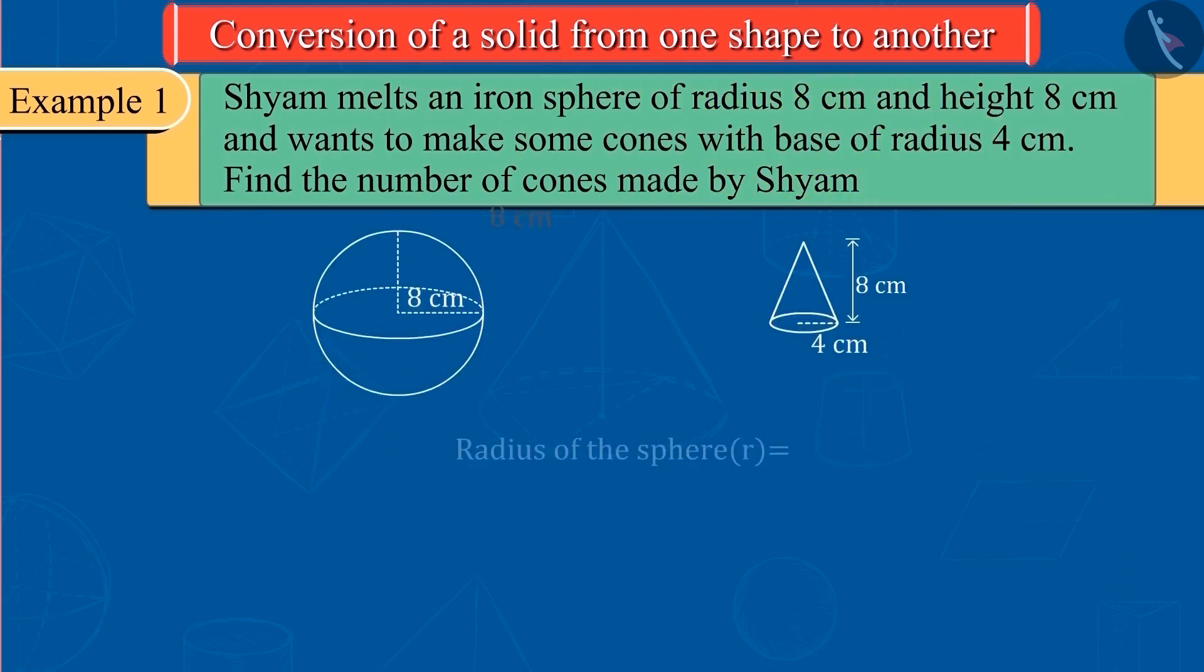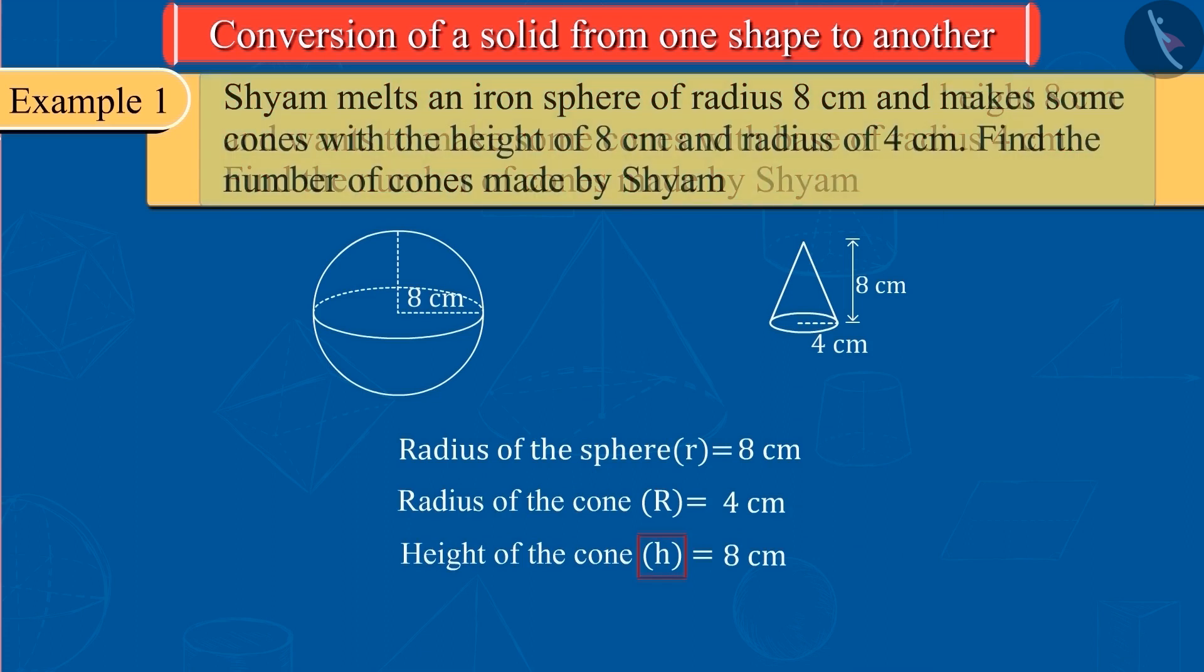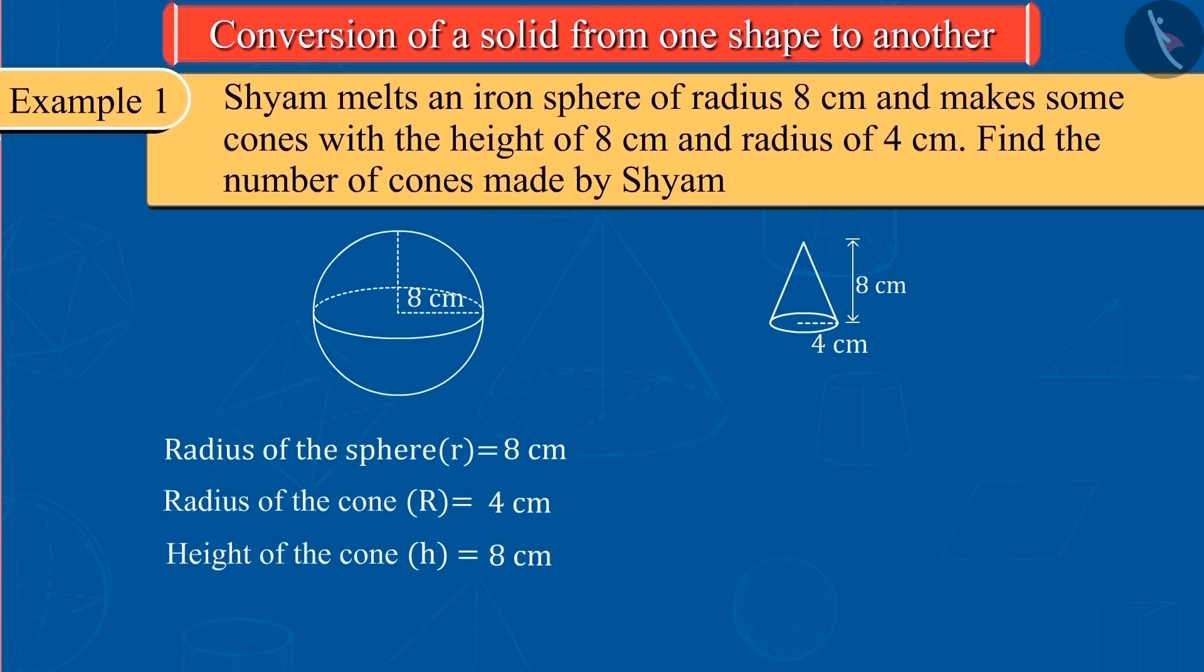From the question, let us consider r as the radius of the sphere and let r be the radius of the new cones formed, height is h. So now, can you calculate the number of cones made by Shyam?